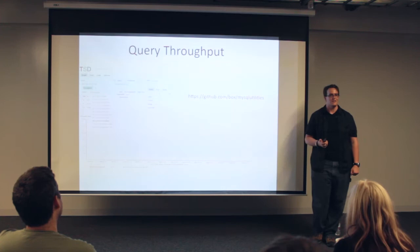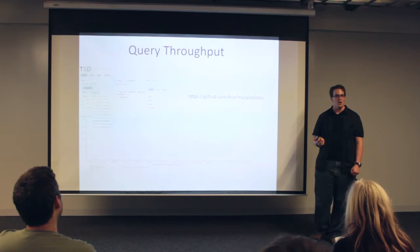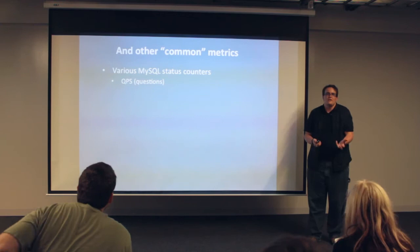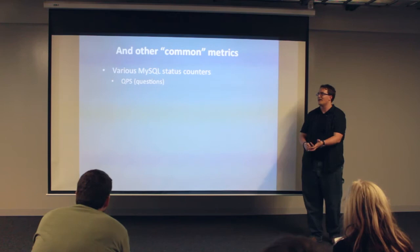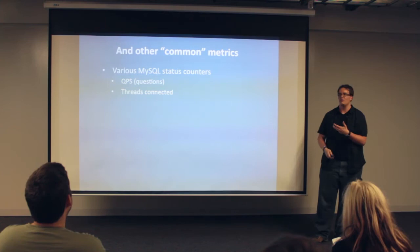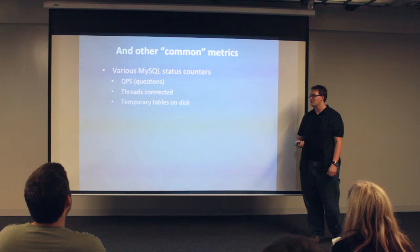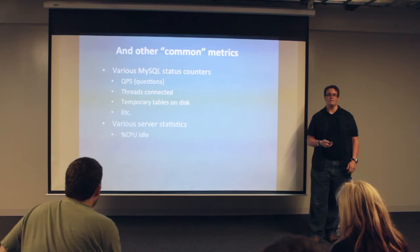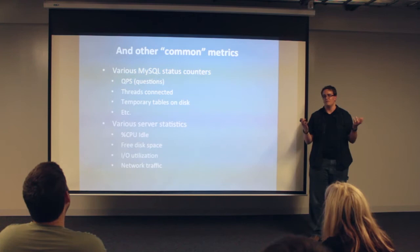Other common metrics to watch: QPS is a big one — make sure there's not a sudden drop. Number of threads connected to the server — there's nothing worse than getting an alert that you've chewed through all available connections, so it's nice to see a ramp-up you can help avoid. Temp tables on disk is a good indicator of queries that might need optimization. And various service statistics: idle CPU, I/O work, free disk space, I/O utilization, and network traffic. Maybe you get a flood of really big packets all of a sudden — it'd be nice to know that might be the cause of a problem.